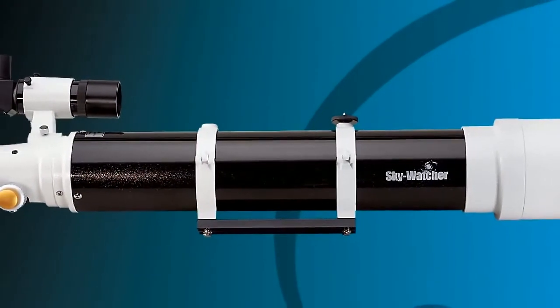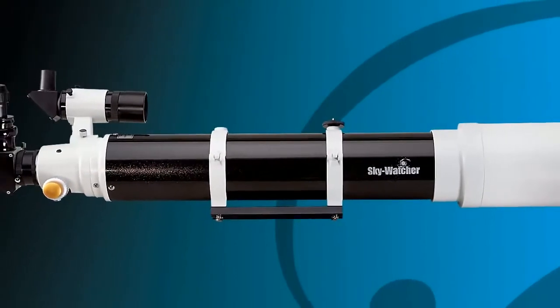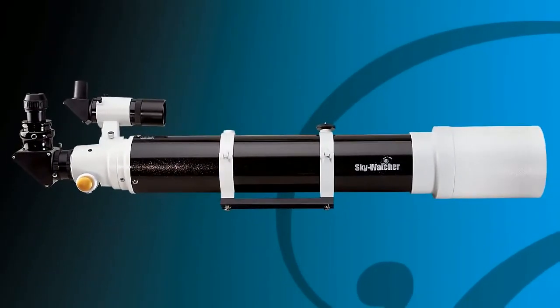Skywatcher Black Diamond Apochromatic Refractors are available in 80, 100, and 120 mm apertures. Each model includes a precision dual-speed Crayford focuser for high and ultra-precise focus control.